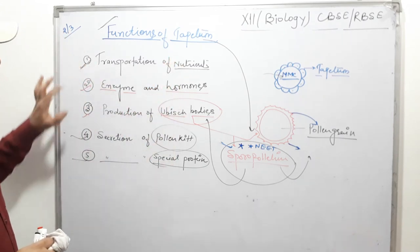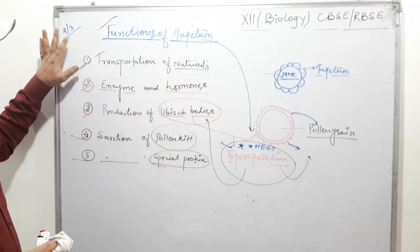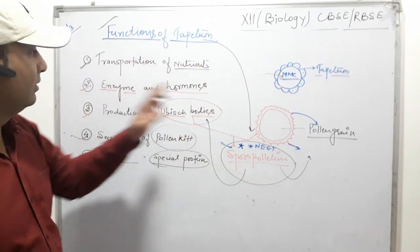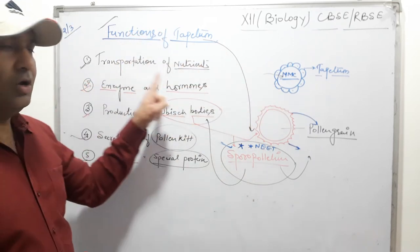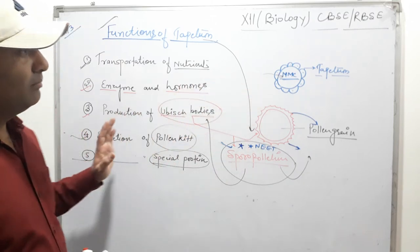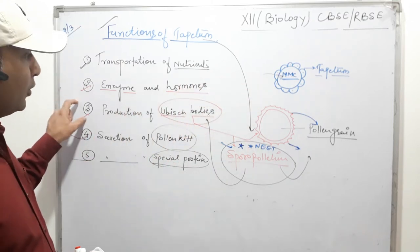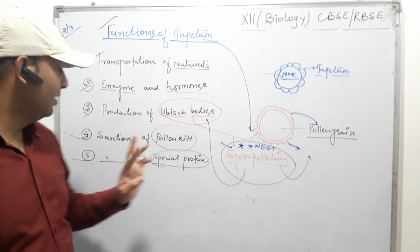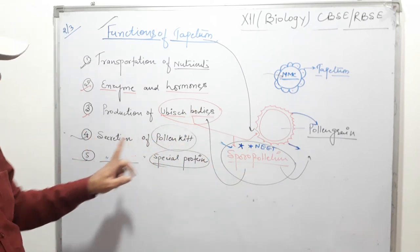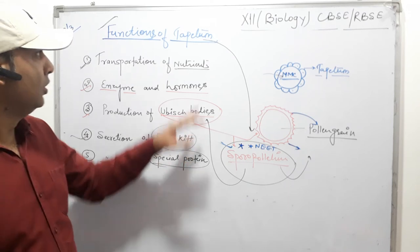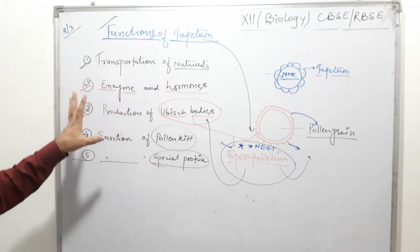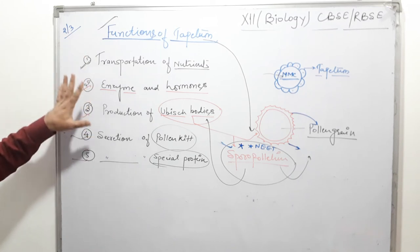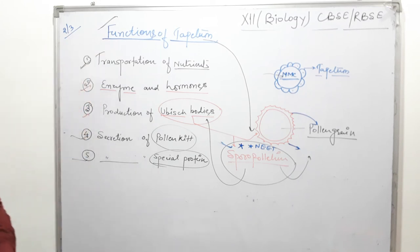So there are five functions of tapetum: one is transportation of nutrients to the MMC from the middle layer; two is secretion of enzyme and hormone for development of MMC; three is production of Ubisch bodies which produce sporopollenin; four is secretion of pollen kit; and five is secretion of special protein. This is an important topic and it comes in exam as two or three mark questions.